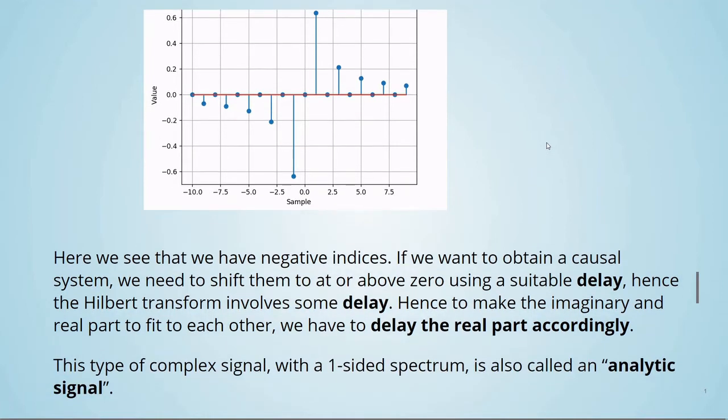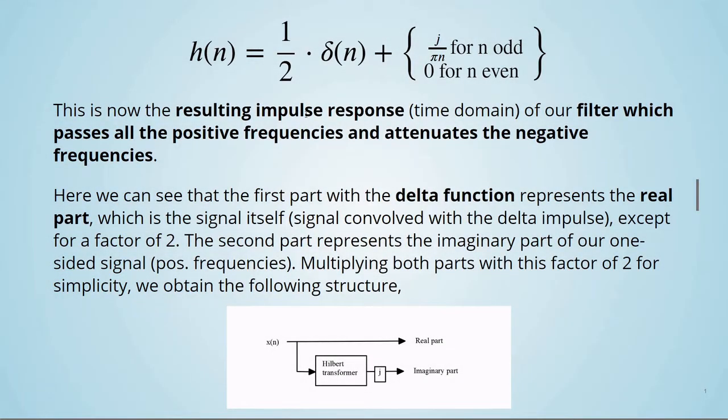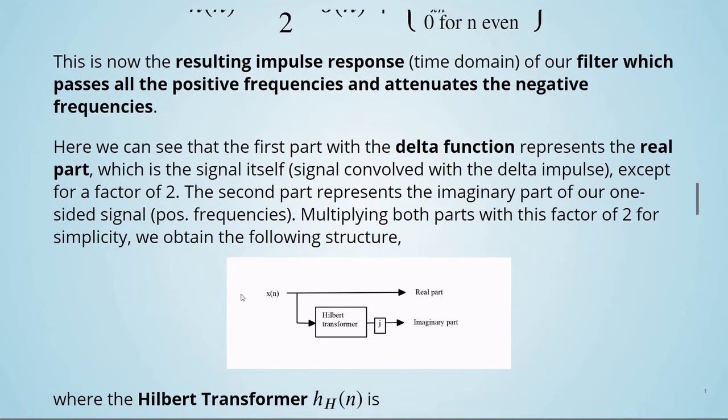This type of complex signal with a one-sided spectrum is also called an analytic signal. Here, we can see that the first part with the delta function represents the real part, which is the signal itself, the signal convolved with the delta impulse except for a factor of 2. The second part represents the imaginary part of our one-sided signal, the positive frequencies. Multiplying both parts with this factor of 2 for simplicity, we obtain the following structure.